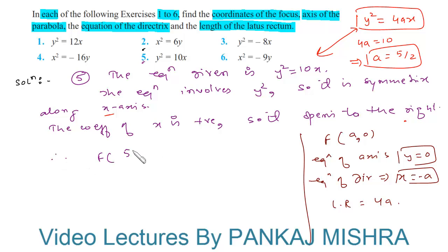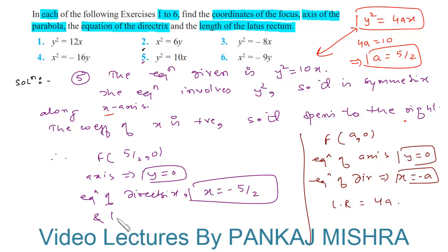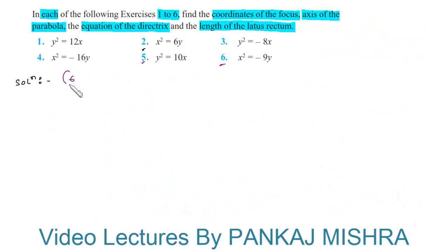Therefore, the focus of the parabola is at (5/2, 0), the equation of the axis is y = 0, the equation of the directrix is x = −5/2, and the length of the latus rectum is 4 × (5/2) = 10. This completes our solution.